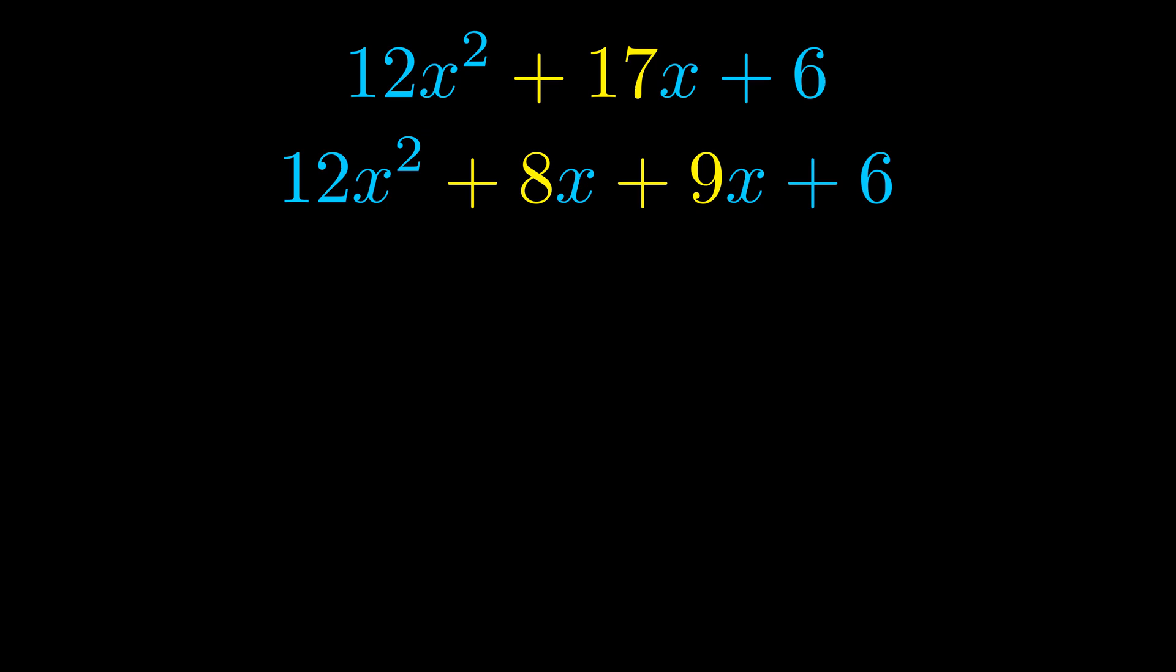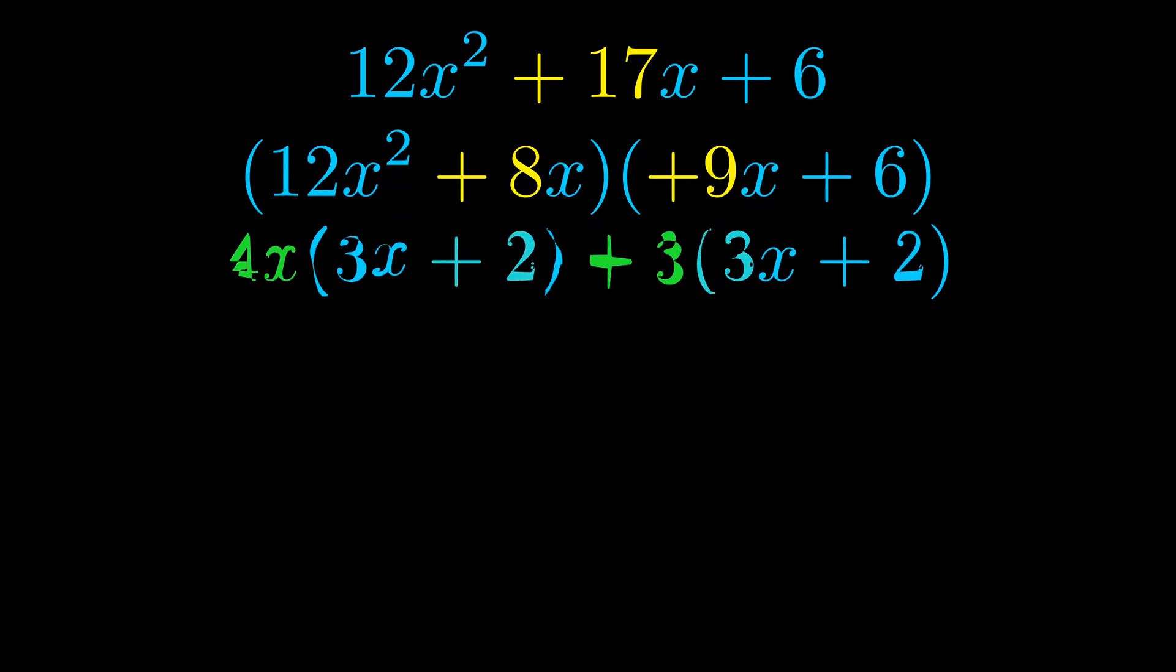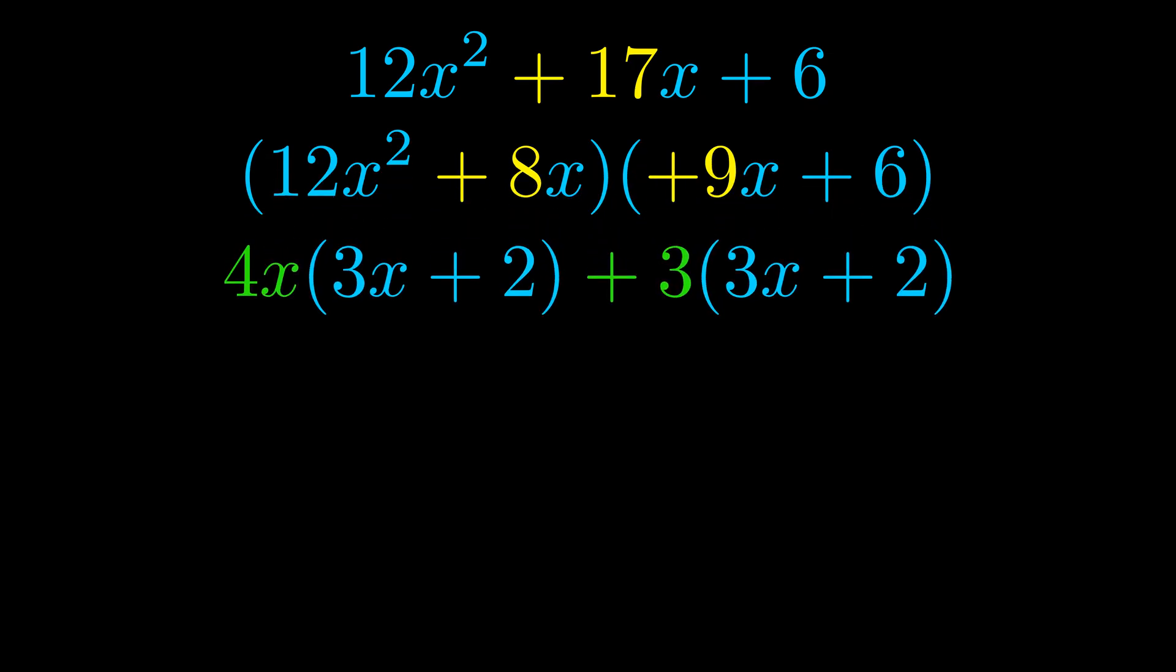Once we've done this we go ahead and put parentheses around the first term and the last term. And we do that so that we can take the greatest common factor out of both terms. We can see the greatest common factor is now outside in green.